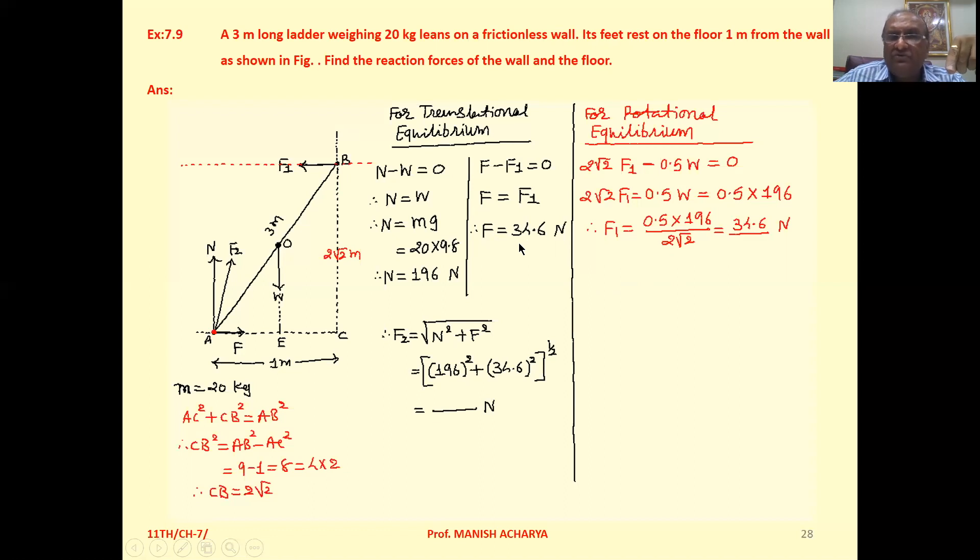Now substitute this value 34.6 here. So your F comes to 34.6 Newton. This F1 reaction force is already calculated. Second one, F2 the reaction force is the resultant of F and N. So we can write F2 equals under root N square plus F square. That is under root 196 square plus 34.6 square. Then solve this one. You will get F2 also. Clear to all of you?